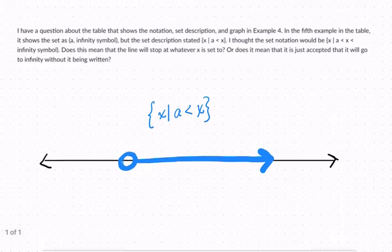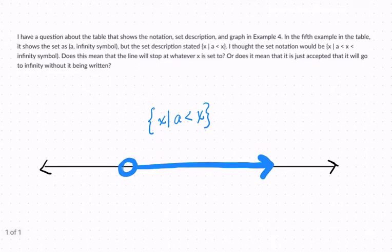So then they say, in the fifth example in the table, it shows the set as, and they're writing it here, and they're saying A infinity symbol, so you could write it like this, so you could say A to infinity.